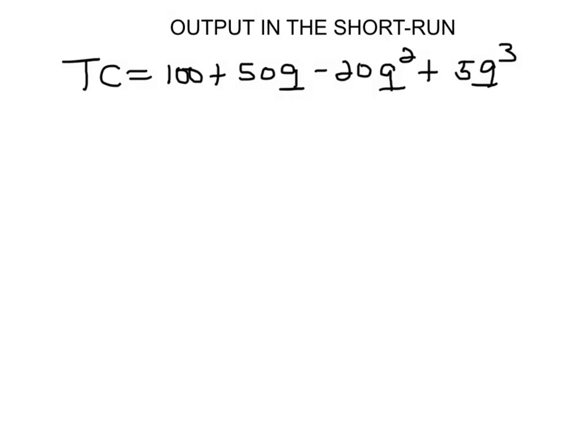So now let's see how to find the shutdown price when you have a total cost function like this one. Since we know that the shutdown price really has to do with average variable cost, then the first thing we do is to find the average variable cost.